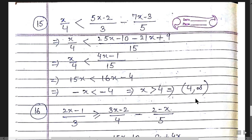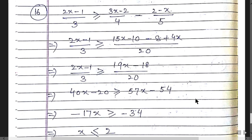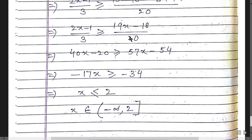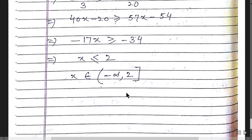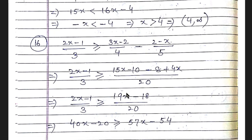Question 16: Take LCM, giving 19x - 18. Cross-multiplying: 40x - 20 and 57x - 54 gives -17x ≤ -34, so x ≤ 2. The answer is (-∞, 2]. I have completed questions 1 through 16; from question 17 onwards I will discuss the questions in the next video. Thank you.